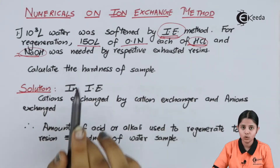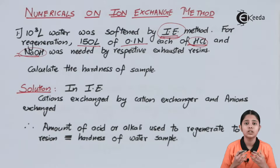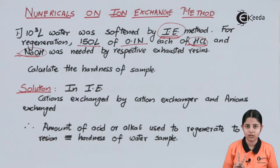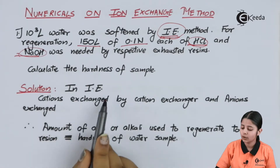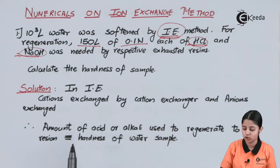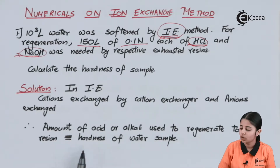The question here is about the regeneration of the resins in the ion exchange method. Both resins are there — cation resins and anion resins — and for both we will solve it. In ion exchange, cations are exchanged by cation exchangers and anions are exchanged by anion exchangers. The amount of acid or alkali used to regenerate the resin is directly proportional to, or corresponds to, the hardness of the water sample.